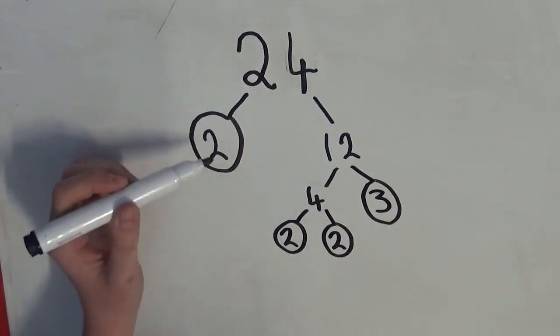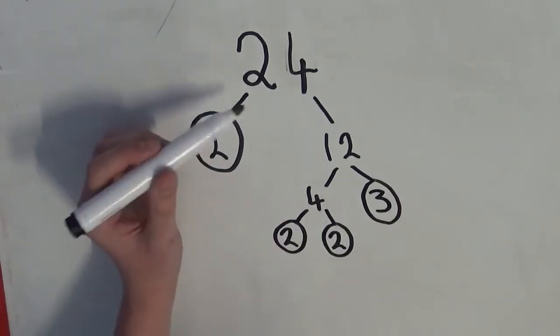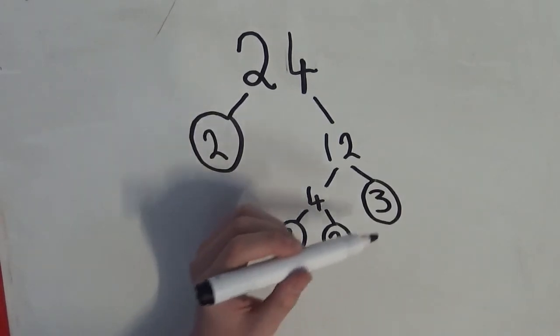Now, here we have it. The prime factors of 24: 2, 2, 2, and 3.